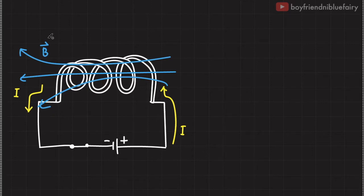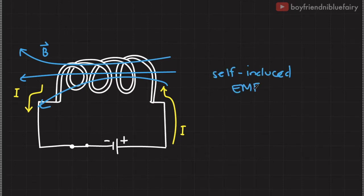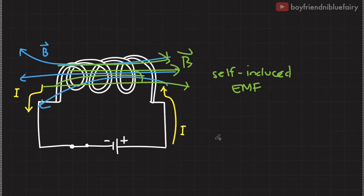Hence, there is a change in magnetic flux in this cross-section, and by virtue of Faraday's law, there will be an induced EMF in our inductor. We call this self-induced EMF. This induced EMF produces a magnetic field that opposes this change of flux. In other words, an inductor basically opposes the variation of current in a circuit. This induced EMF is based on the magnetic flux due to this current.